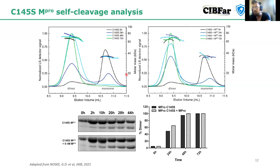Both the tetrameric and monomeric samples, no matter where you start, show a shift from monomeric states at zero hours — with the majority as monomers — to dimers after 24 hours, eventually becoming full dimers. This seems to be more or less directly proportional to the cleavage of the N-terminal, and this N-terminal cleavage does not seem to be much influenced by the presence of active M-pro in the sample.